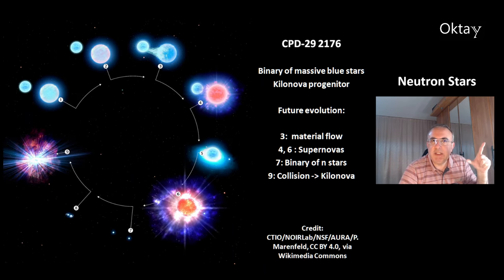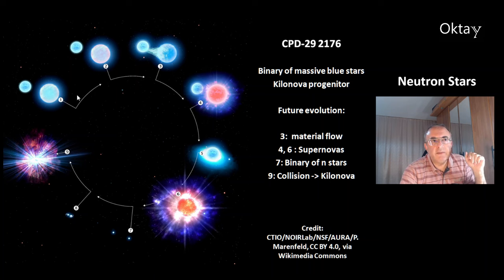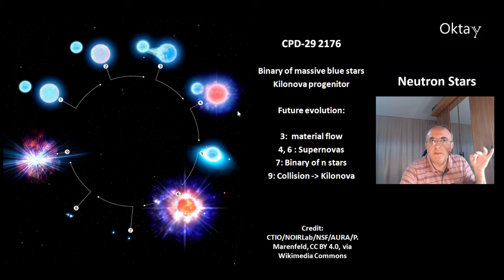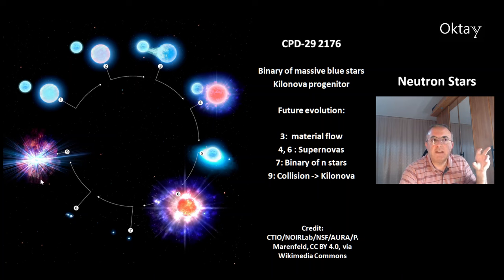This is another object, CPD-29 2176, a binary of massive blue stars and a kilonova progenitor. This picture shows you the future evolution of the system. There is a matter flow from the bigger star to the smaller star. The bigger star runs out of hydrogen first and then you get a supernova. After some time the second star also explodes in a supernova and you get a pair of neutron stars. They slowly lose momentum and approach each other, and the final step is the collision of the two neutron stars, which is called a kilonova.